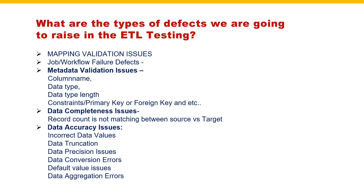Next is data conversion errors and default value issues. For example, if a column value is null but we are going to set it as 0 - if that 0 is not loaded in the target, we can consider it as a default value issue. Another scenario: some columns which we are deriving ourselves - like application name - are not derived from the source system but kept as a default value. If that default value is not coming in the target system, then we are going to raise this defect.